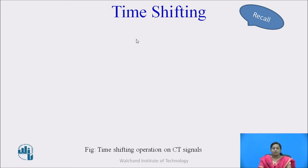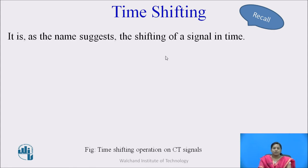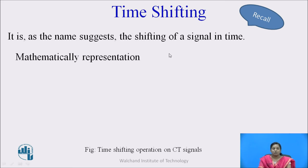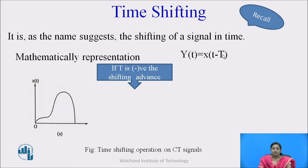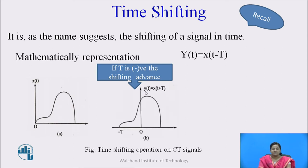Please recall the time shifting property. As the name suggests, it is the shifting of the signal in time. In case of the time shifting property, it is mathematically represented as y(t) = x(t - T). If the capital T value is negative, then this will lead to shifting the signal towards the left side, meaning advance the signal.